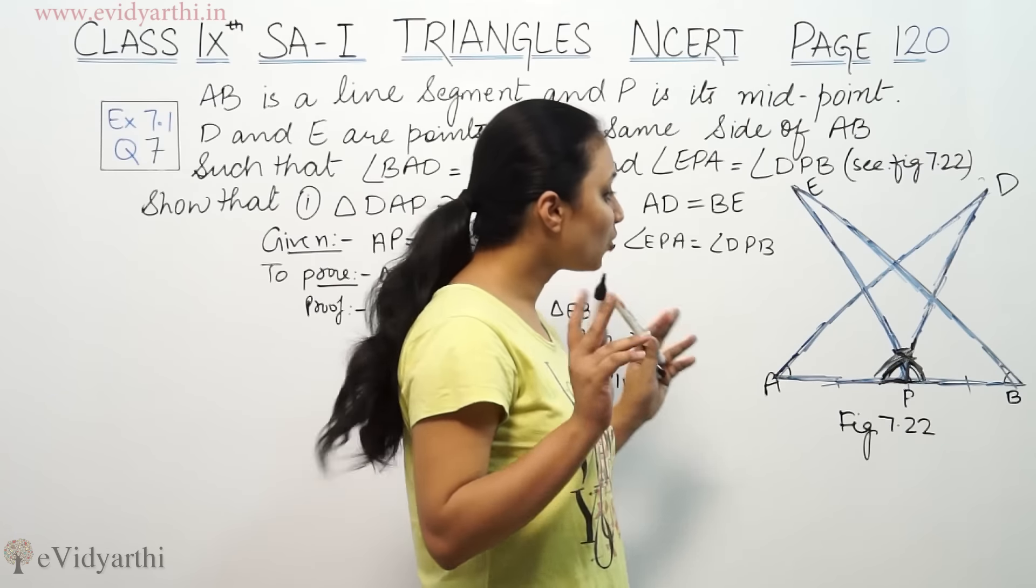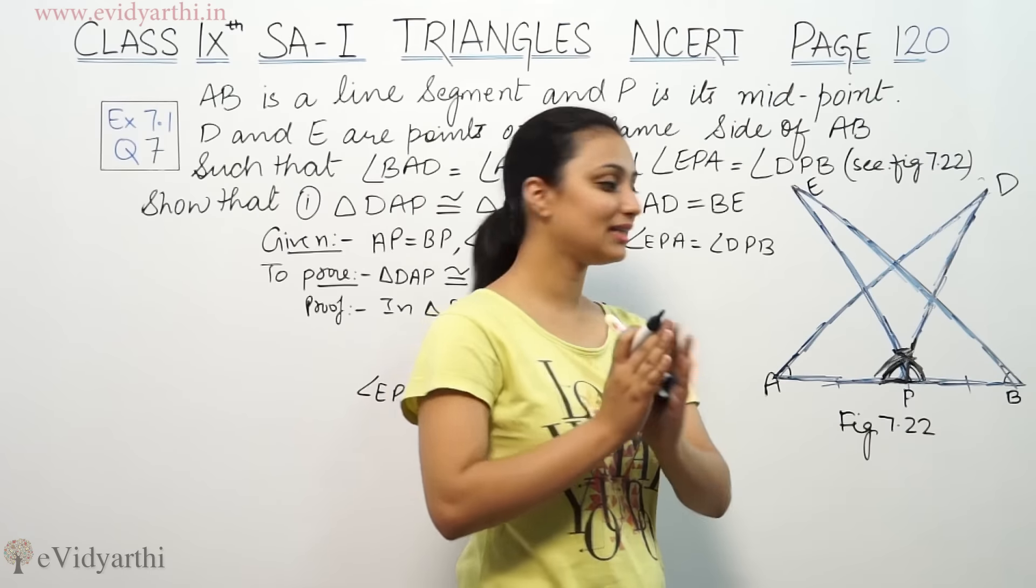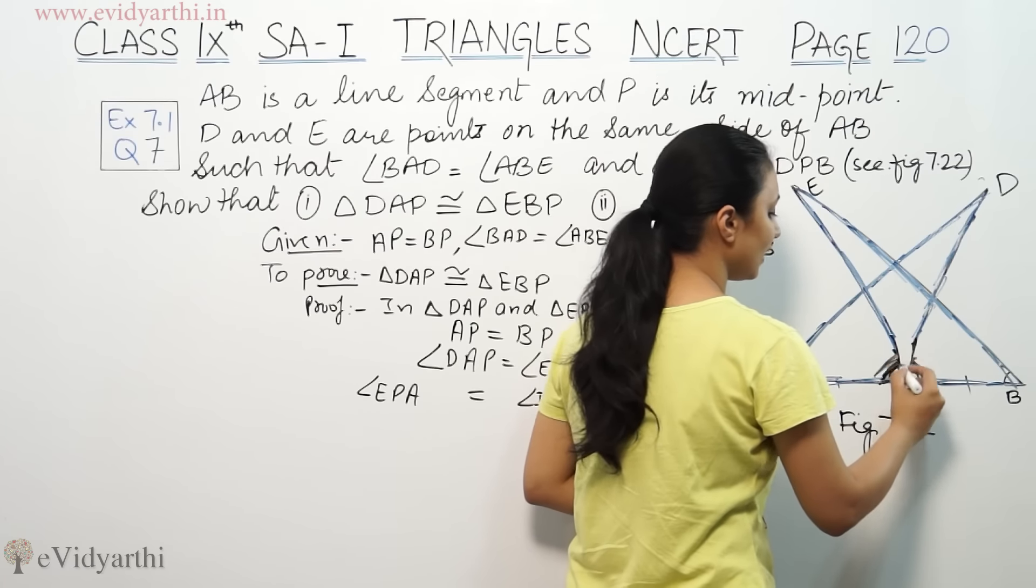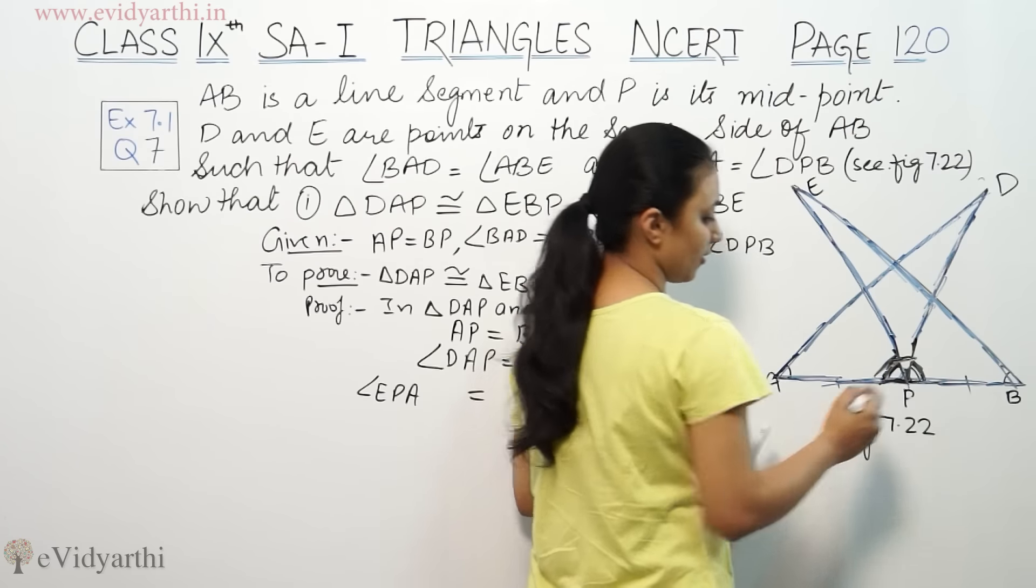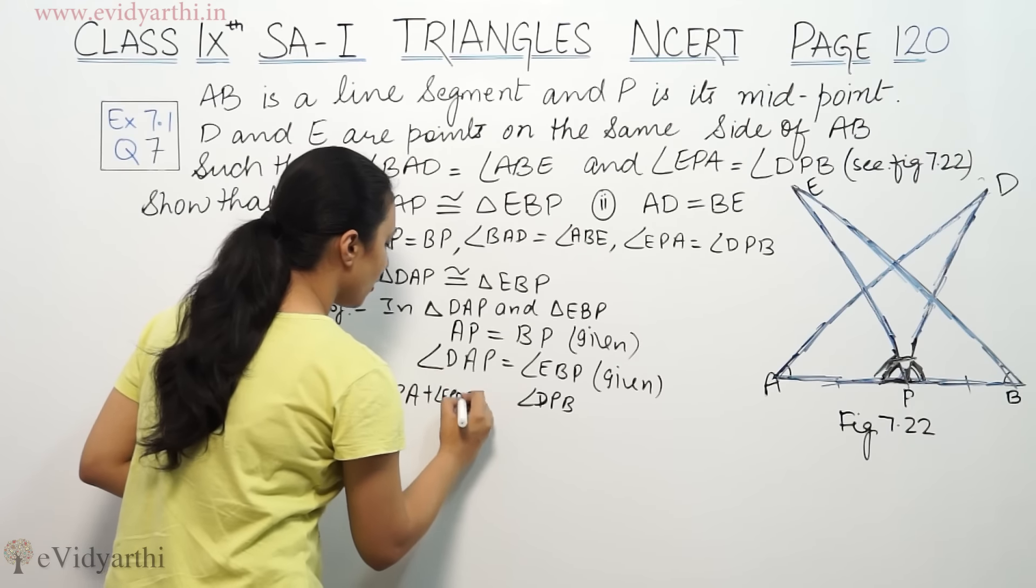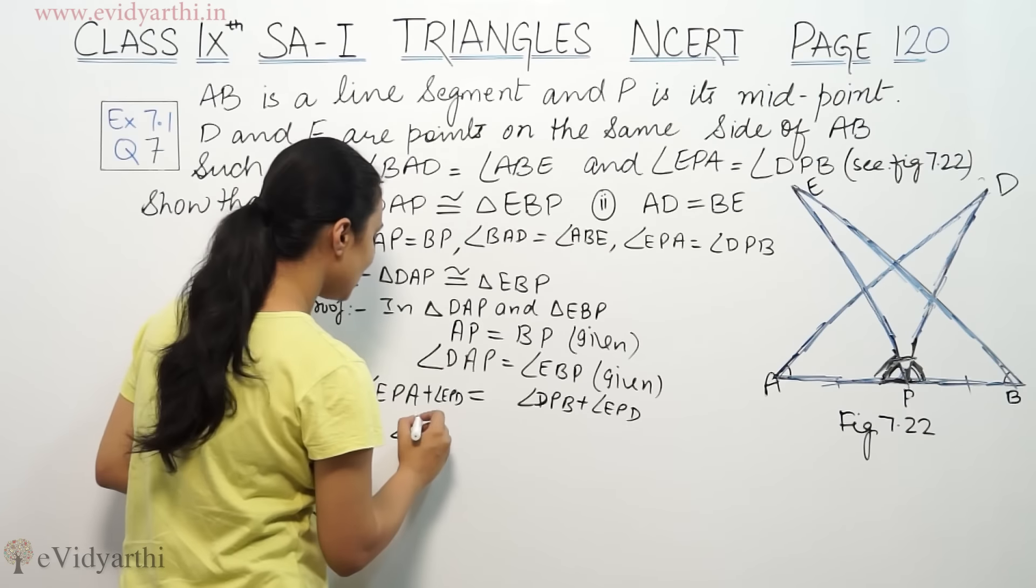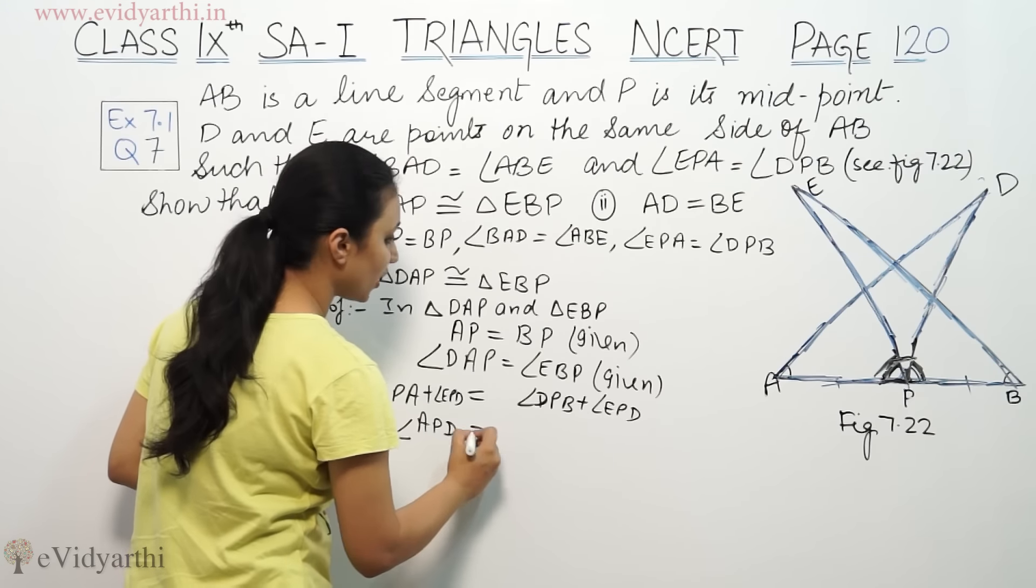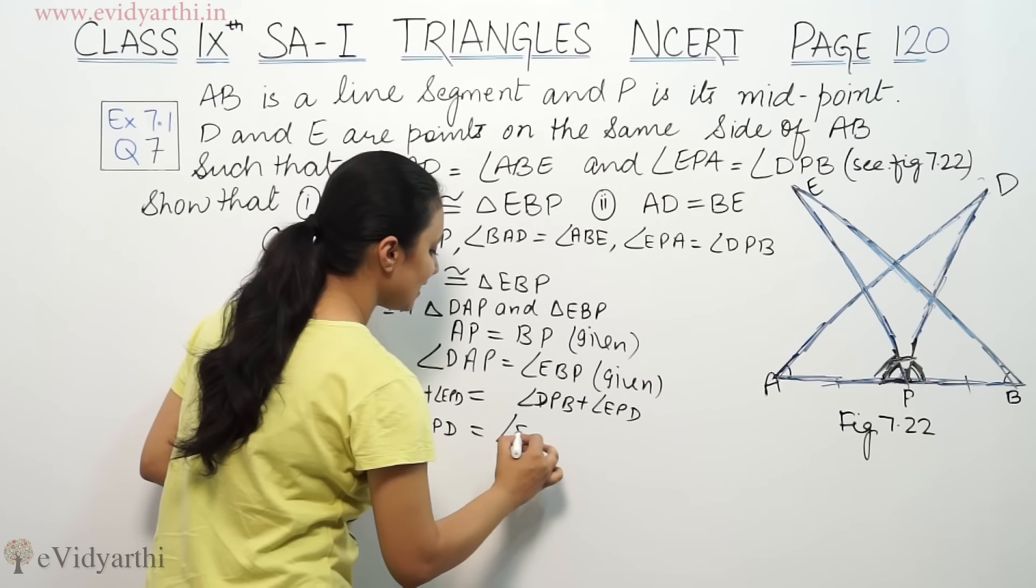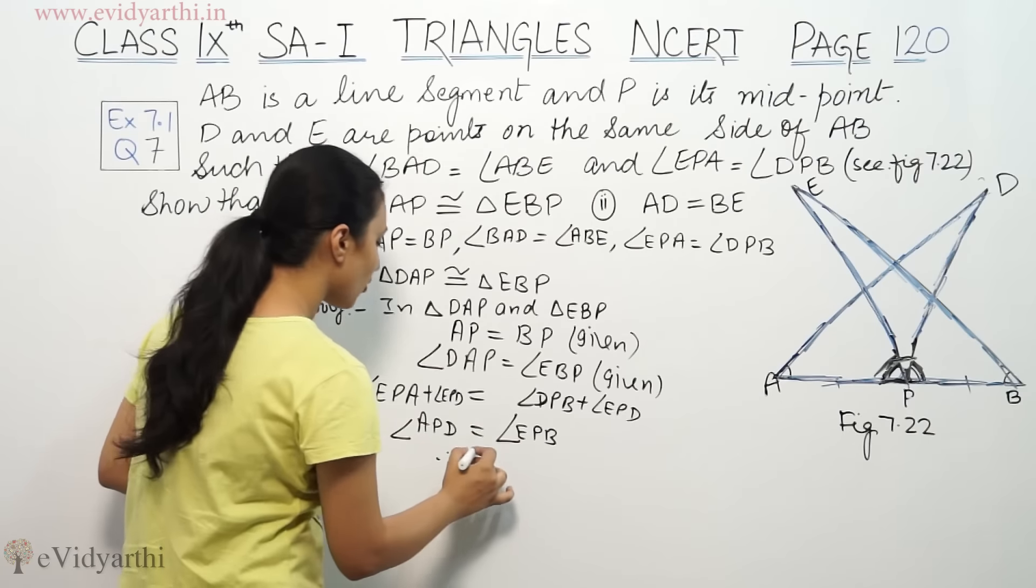So we add a common angle EPD. If we add angle EPD to both sides, we add EPA plus EPD here and BPB plus EPD here. So we have three things which we can use to call triangles congruent.